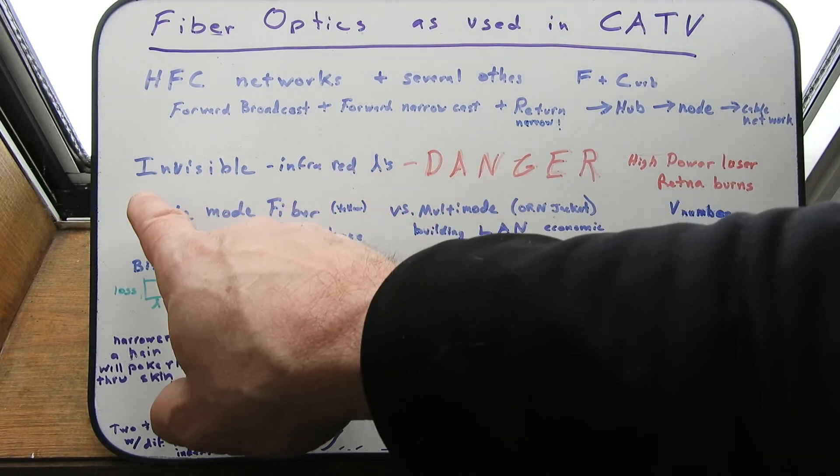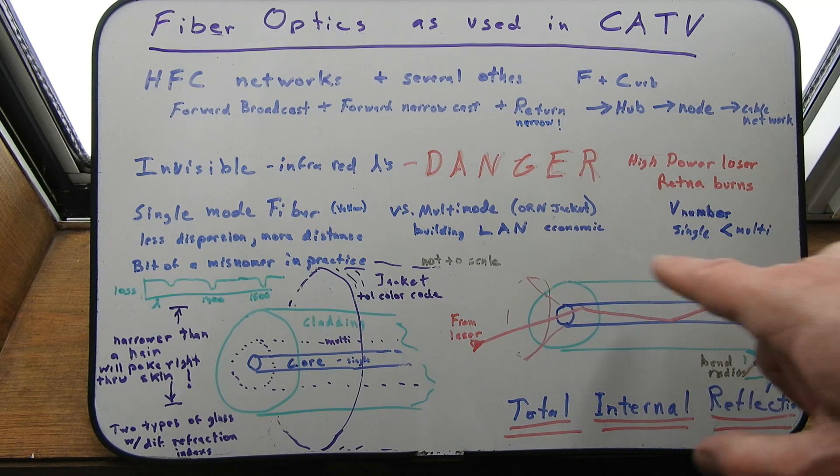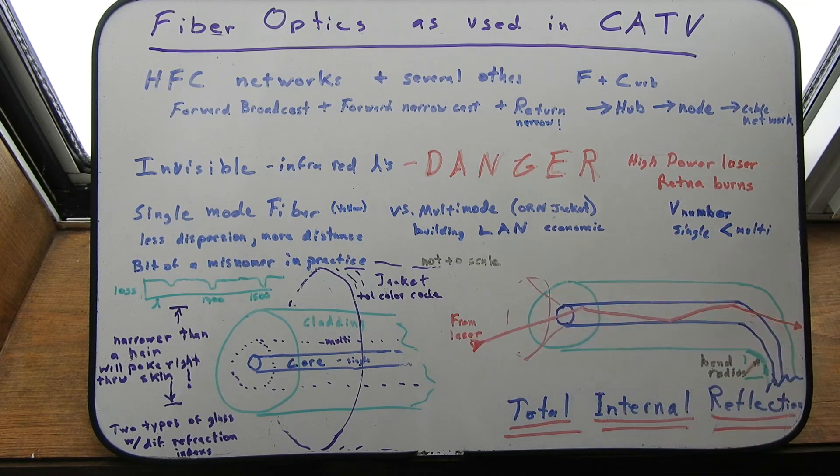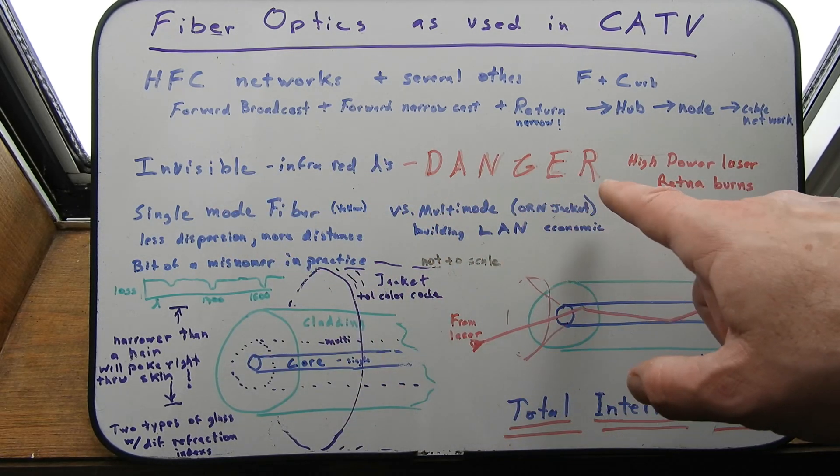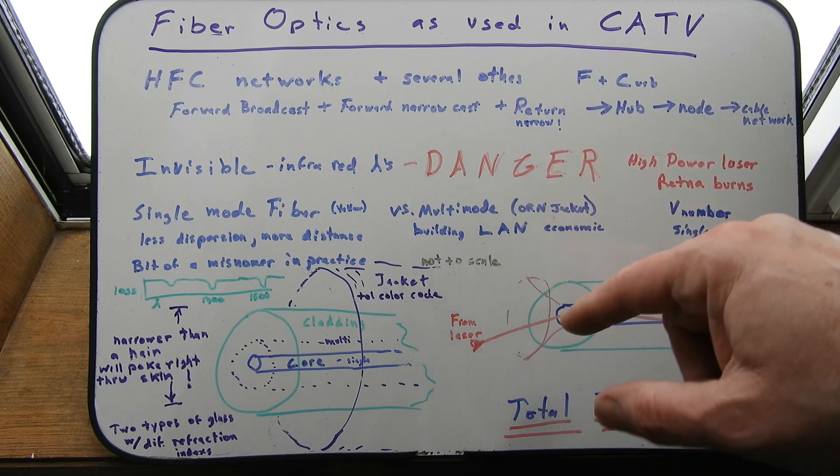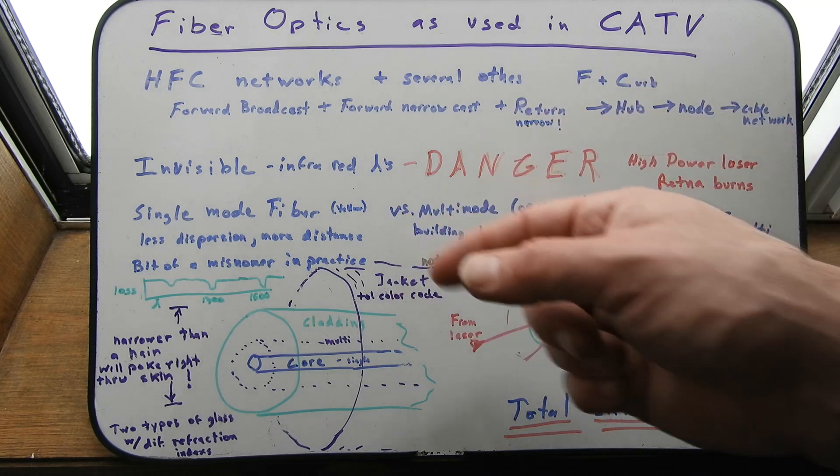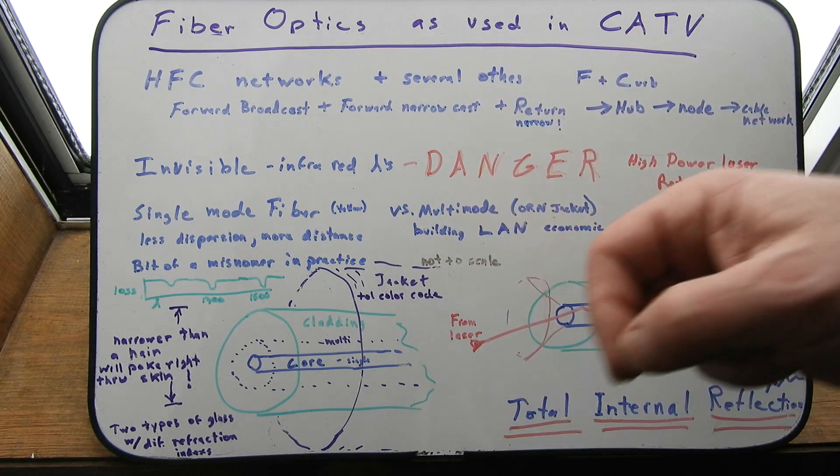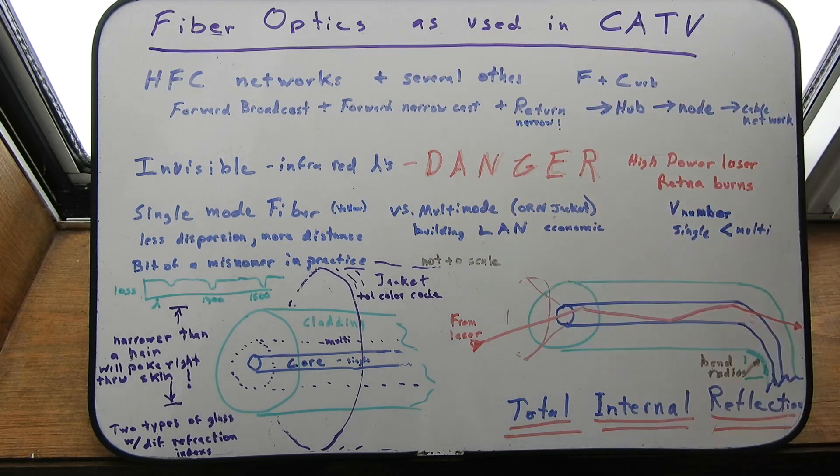So the light used in cable TV fiber optics, or pretty much any fiber optics for practical uses, is usually infrared. And even though you can't see it, it can still be dangerous to your eyes. Which makes it kind of a double danger, because you don't even see it happening. If you look into a fiber that's being powered by an infrared laser, it can actually start killing cells in your retina as you're looking through your eye.